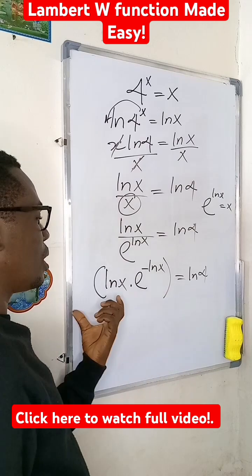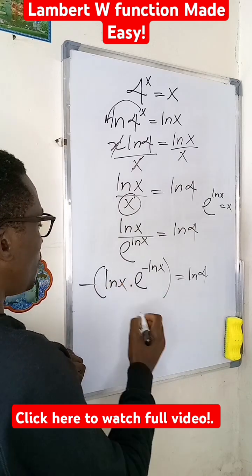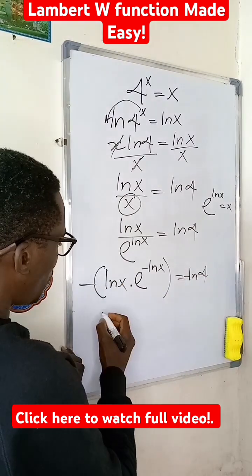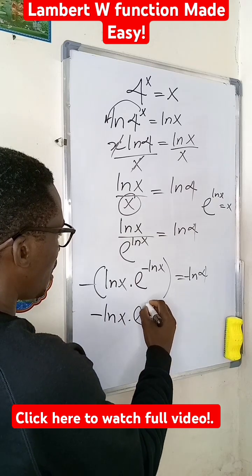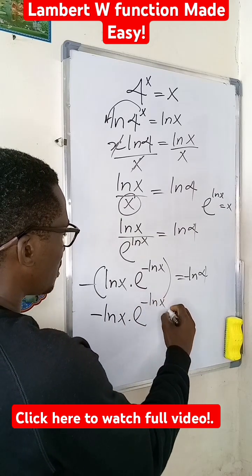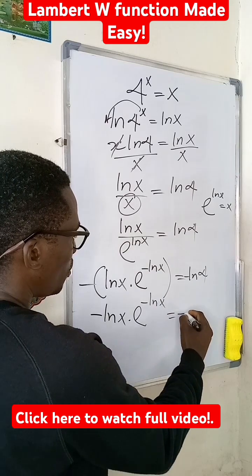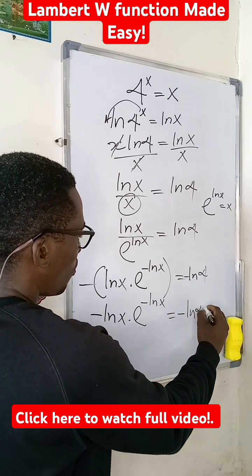Now, look at this. Let me multiply both sides by negative. That will give me negative ln of x multiplied by e to the negative ln of x, and this will be equal to negative ln of 4.